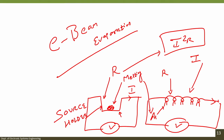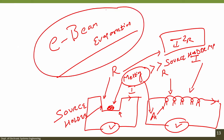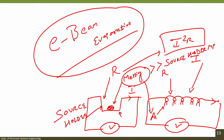This is the principle of thermal evaporation. The difficulty occurs when the melting point of the source is extremely high compared to the source holder. To overcome this, we use electron beam evaporation. Electron beam evaporation is a physical vapor deposition (PVD) process that allows users to evaporate materials that are difficult or even impossible to deposit using standard thermal evaporation.